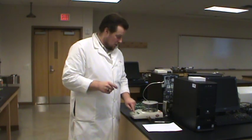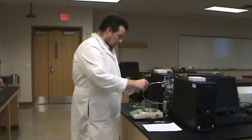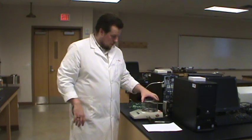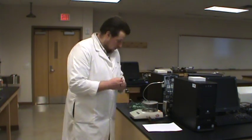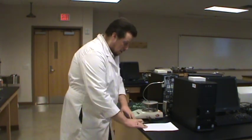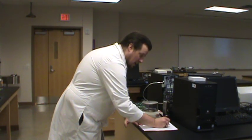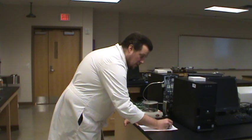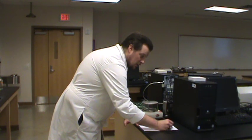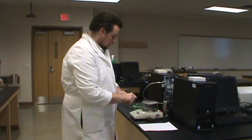So first of all, you're going to get your unknown, make sure you write down the unknown number, come over to the balance and get the mass of the entire vial. So this vial with ore in it happens to weigh 4.577 grams. That's the vial plus the ore sample.